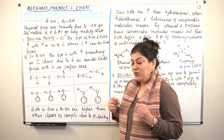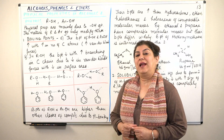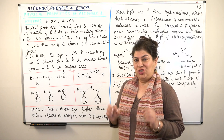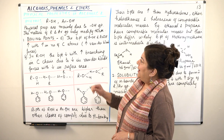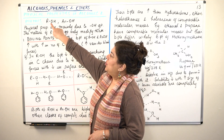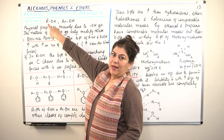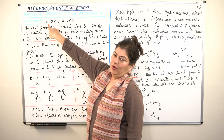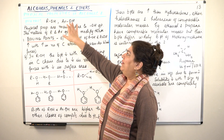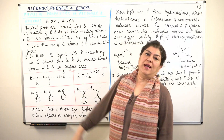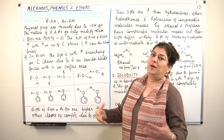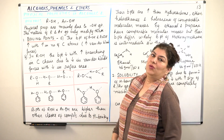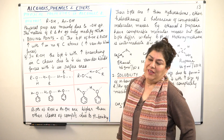As you know, the functional group in alcohols and phenols is OH. When OH is attached to an alkyl group, it is known as an alcohol. And when OH is attached to an aryl group, that is a benzene ring, it is known as a phenol.